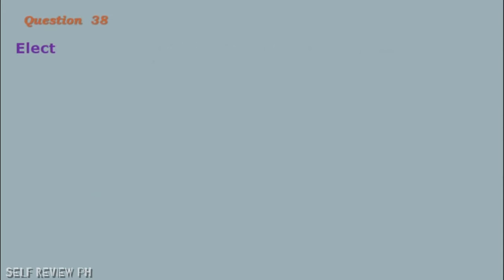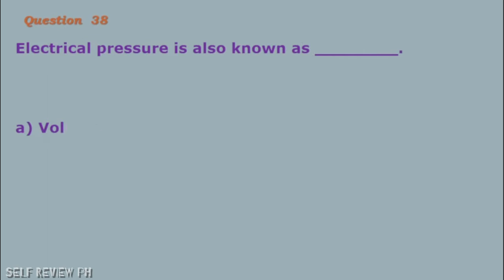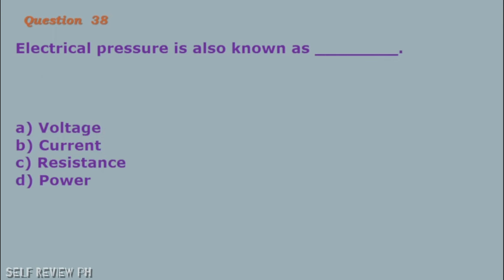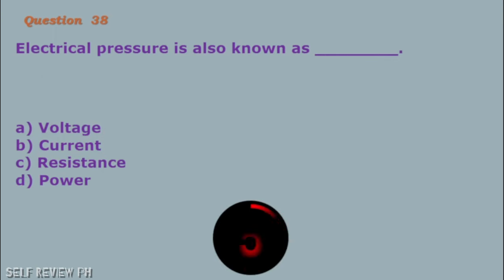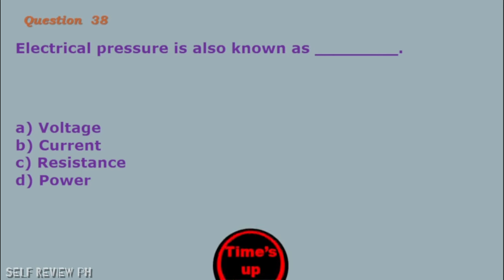Question number 38: Electrical pressure is also known as blank. A. Voltage B. Current C. Resistance D. Power. The correct answer is letter A, voltage.